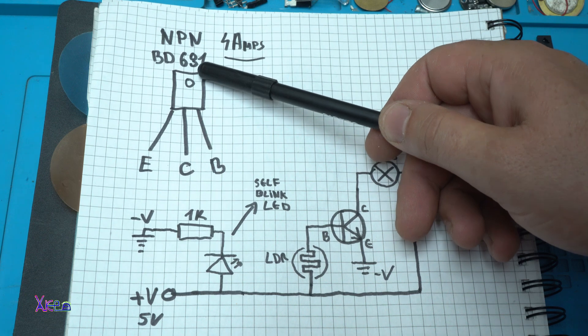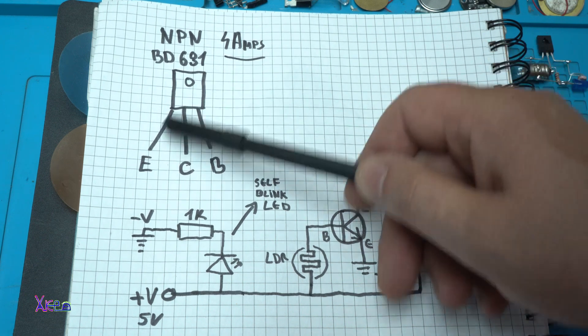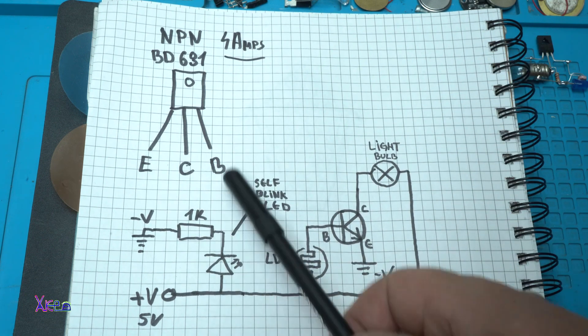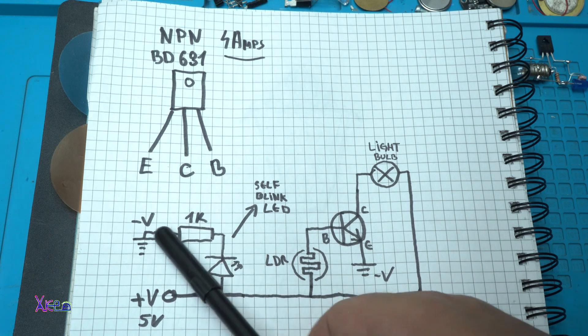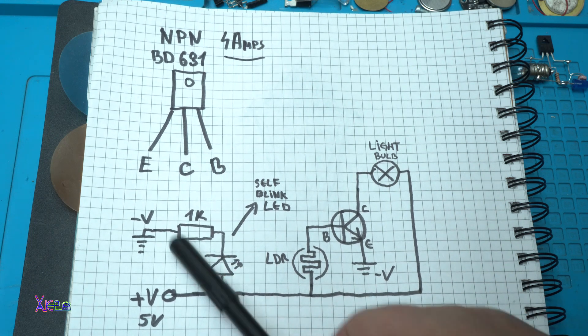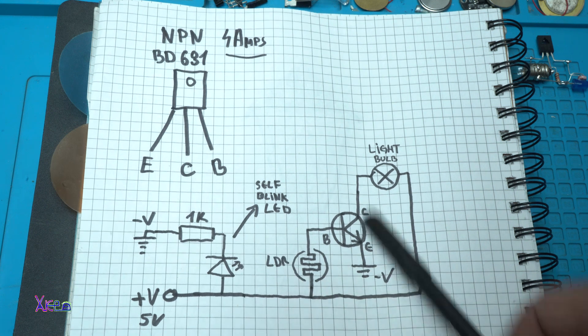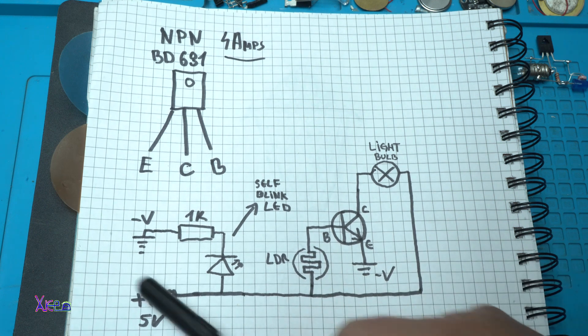Here is the NPN transistor BD681 pinout - emitter, collector, base. And for the self-blinking LED you need only one resistor of 1 kilo-ohm because this circuit will work on 5 volts.